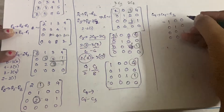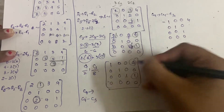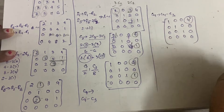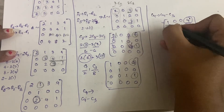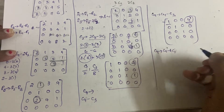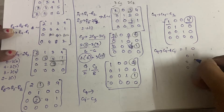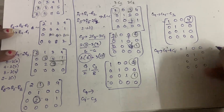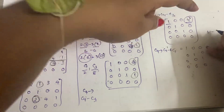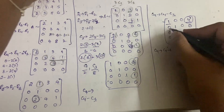After C4 minus C3 we have column 4 as 4, 0, 0, 0. The remaining 4 can be removed by doing C4 minus 4·C1: 4 − 4×1 = 0, 0−0=0, 0−0=0, 0−0=0. So column 4 becomes all zeros.